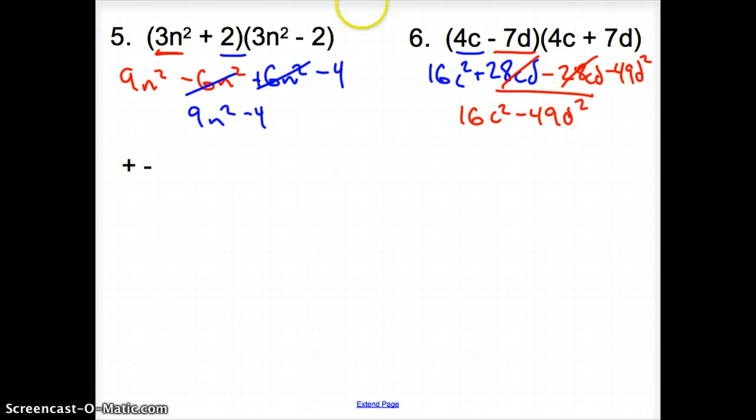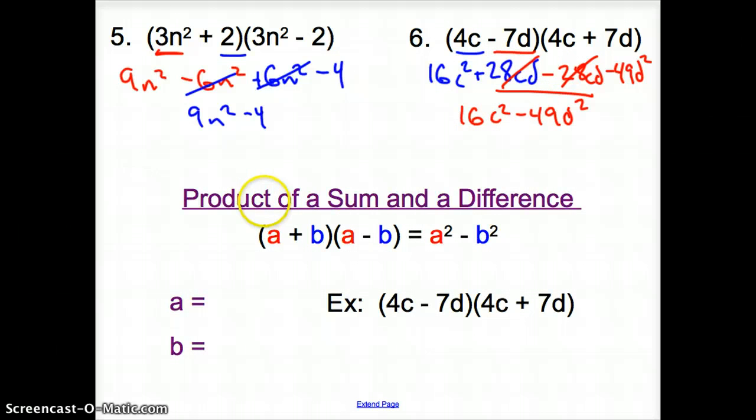Now if we look at our answers, do we find any pattern from here to here, from here to here? Well, again, mathematicians did, and they called it the product of a sum and a difference, because they're exactly the same, but one has a plus sign and one has a minus sign, so it's a squared just minus b squared.